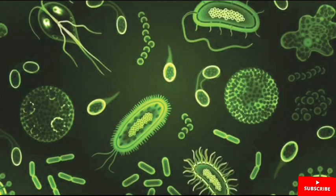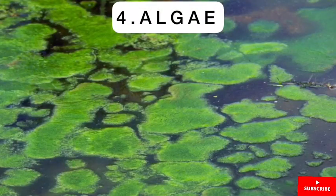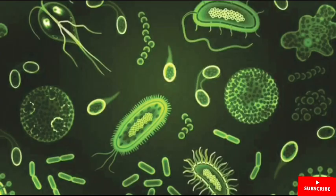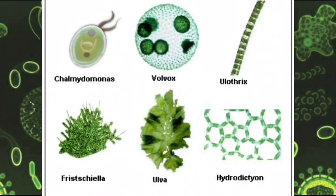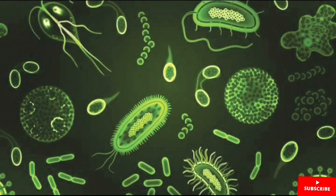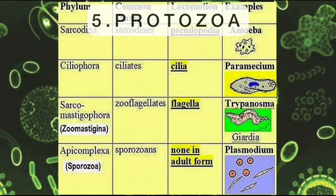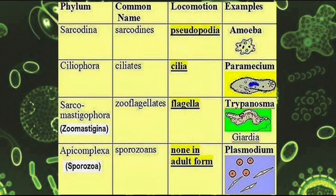The fourth microorganism we have on our list is algae, which are aquatic microorganisms that have the ability to carry out photosynthesis. We have examples such as the Volvox, the Chlamydomonas, the Cyanobacteria, and the green, red, and brown algae. We have the protozoans, which are classified into the following phyla: the Sarcodina, the Ciliophora, the Sarcomastigophora, and the Apicomplexa.